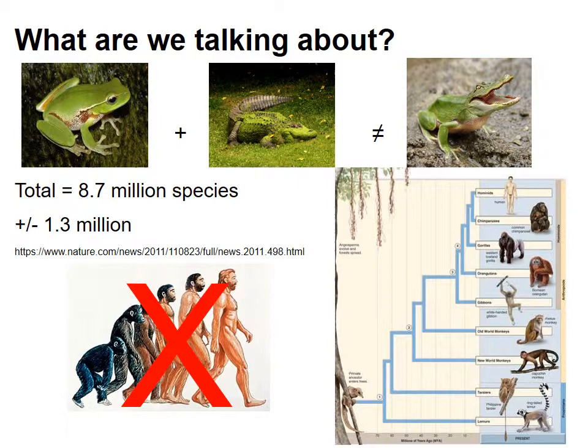There are varying estimates on how many total species there are. One estimate says there are about 8.7 million species, plus or minus 1.3 million. That estimate is pretty variable because there are still species we haven't discovered yet, and we're still classifying and organizing species.